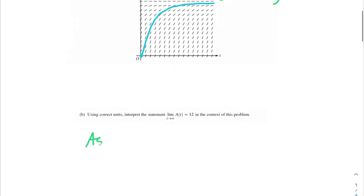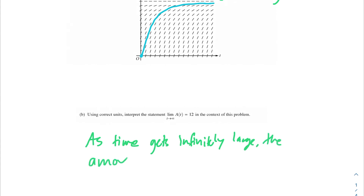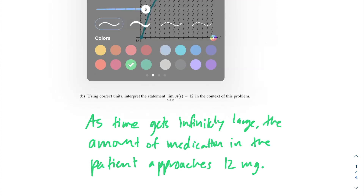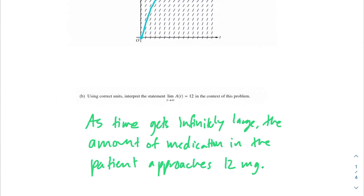As time gets infinitely large, the amount of medication in the patient approaches 12 milligrams. The key points to include in your answer are: as time gets infinitely large, the amount of medication in the patient approaches 12 milligrams. We've got our units, we've noted that it only approaches but doesn't reach 12 milligrams, and we've also mentioned that our time is getting infinitely large.